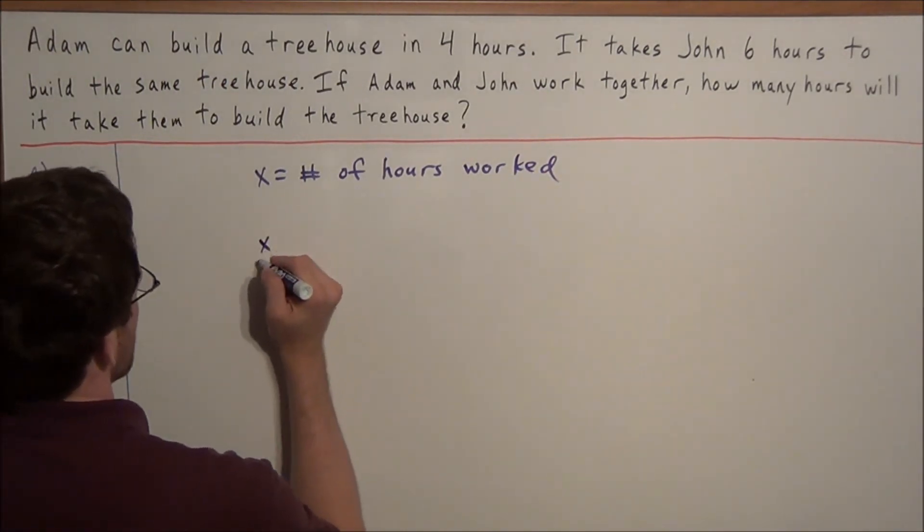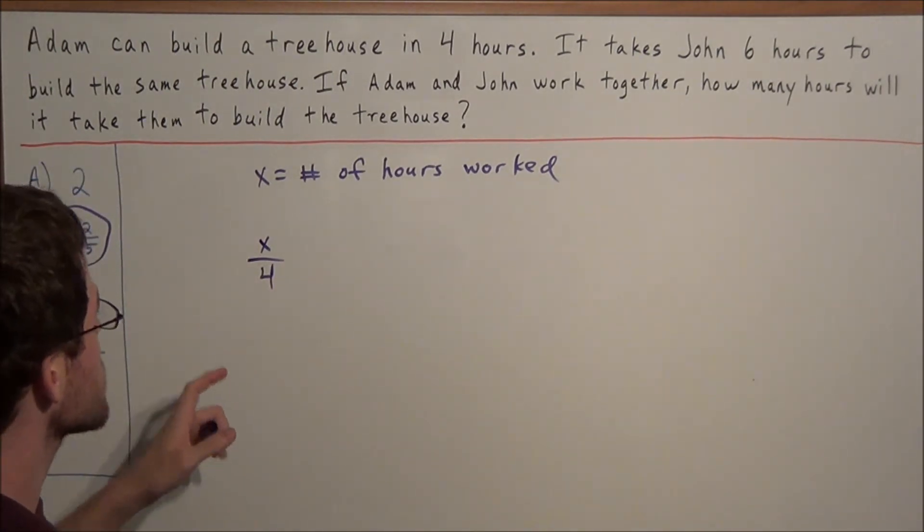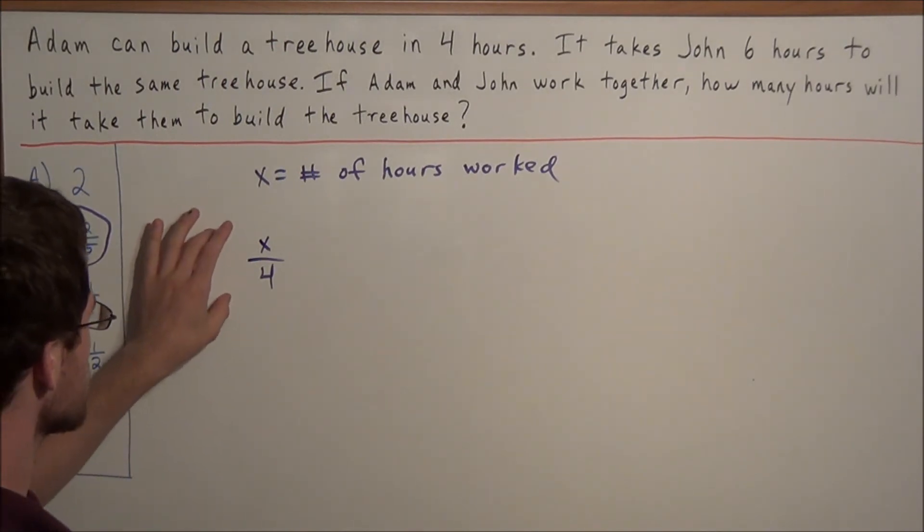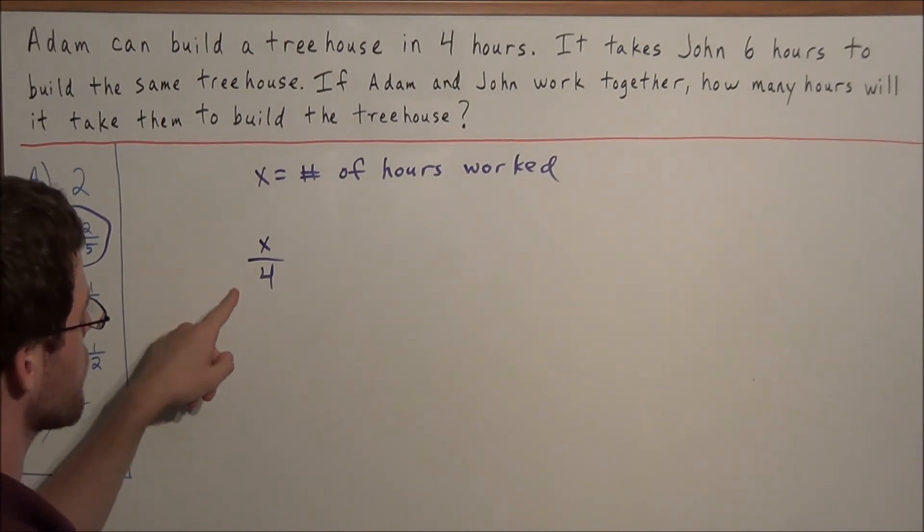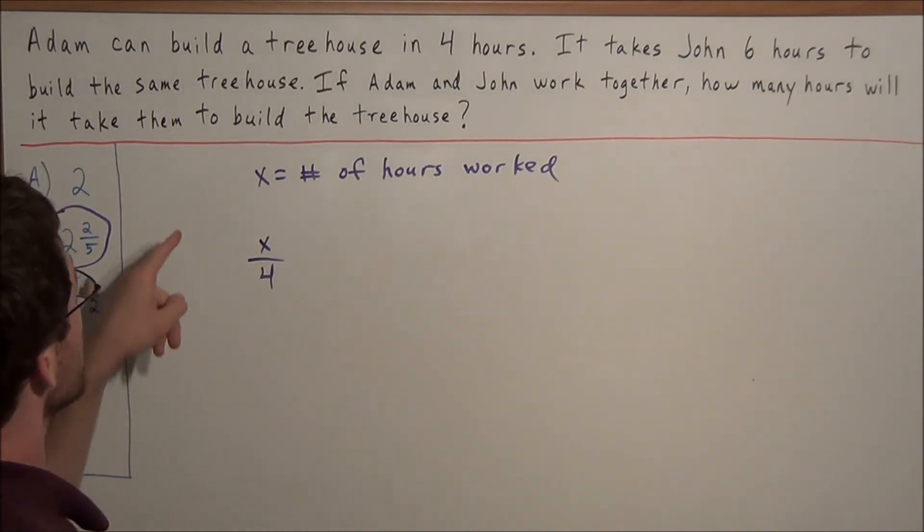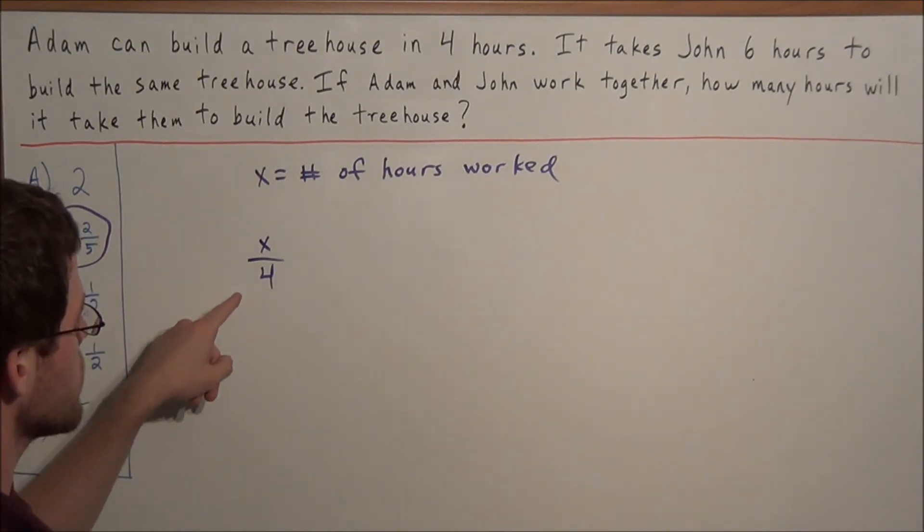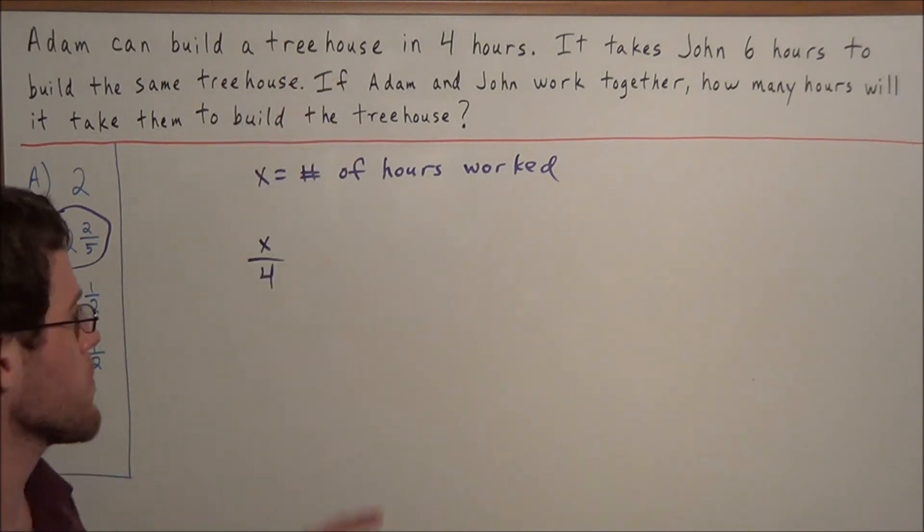Now we start by setting up the equation. We have x over four, where x over four represents the rate at which Adam works. For instance, if we look at this in more detail. If Adam works for four hours, he's built four divided by four, or one house. If he works for eight hours, then he's built eight divided by four equals two houses. Which makes sense because he builds one treehouse every four hours.